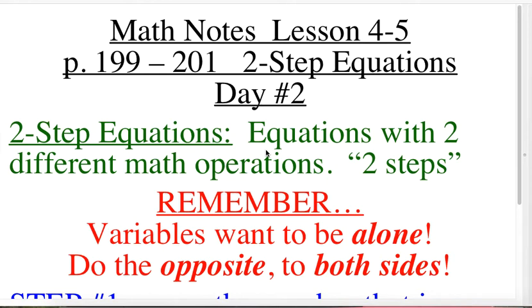Let's remember what two-step equations are. Those are equations with two different math operations that are going to need to be done in order to get the variable isolated, to get that variable to be alone and happy. That's why we call them two-steppers, because we're going to have to do two math operations.